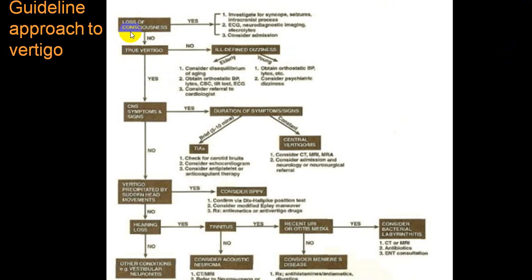In the diagnostic flowchart: if the person has loss of consciousness, rule out causes of syncope; if no, try to rule out true vertigo. If the person has rotational feelings or surrounding is rotating, it favors true vertigo; if no, rule out other causes of dizziness. If true vertigo, find out whether it is central or peripheral. If vertigo is precipitated by sudden head movements, it favors BPPV — perform the Dix-Hallpike maneuver to confirm. If no hearing loss, it favors vestibular neuronitis.